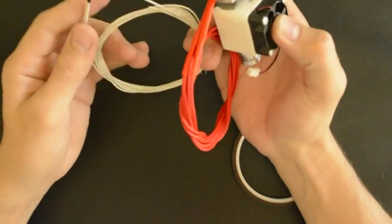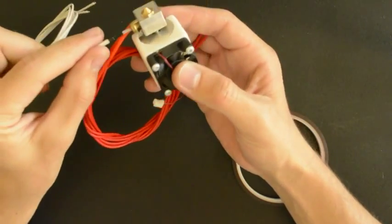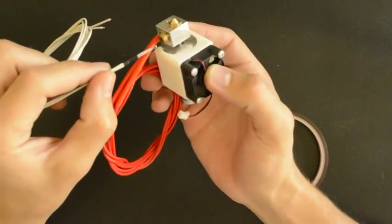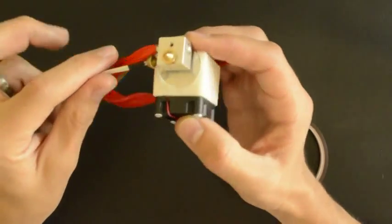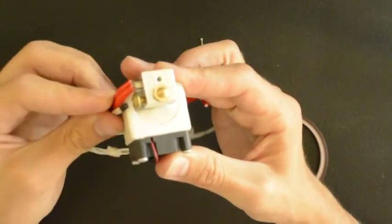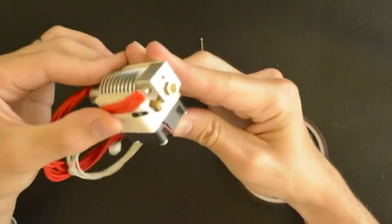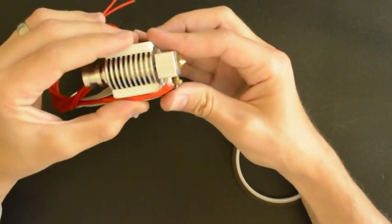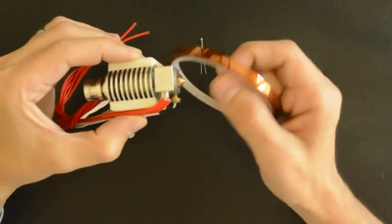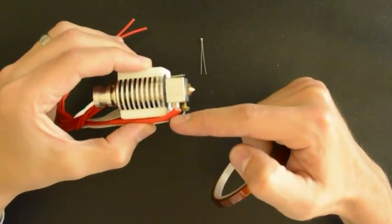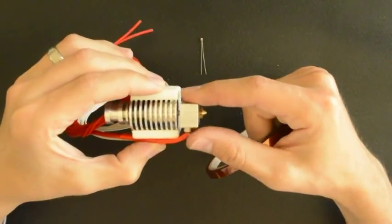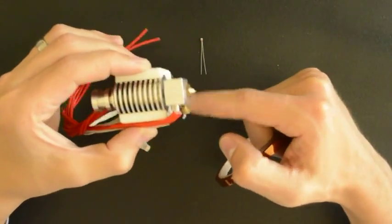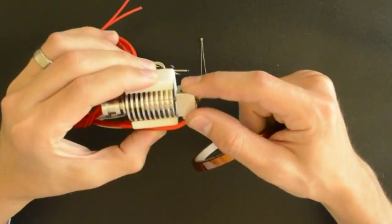So now we take the thermistor. We insert it into the hole provided. You will see that the hole is quite deep. And then we will bend the wires upwards. So that looks like that. And then we take our Kapton tape and we turn it around. We fasten everything together to keep it in place by winding the Kapton tape around the heater block.